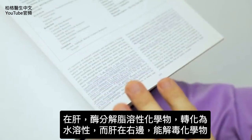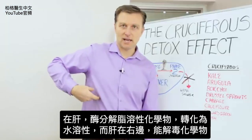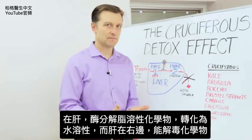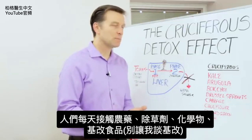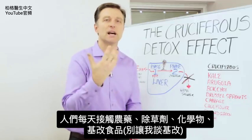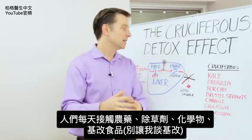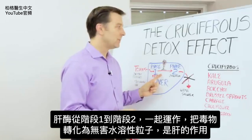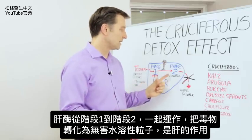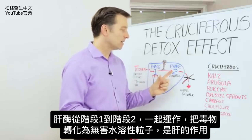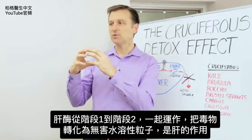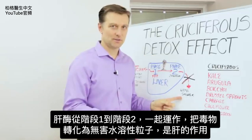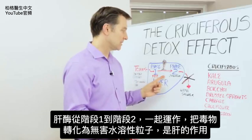So our body basically has enzymes to break down fat-soluble chemicals into water-soluble chemicals, and this happens in the liver. You've got a liver — it's on the right side. The liver has the ability to detoxify chemicals. Every day we're exposed to pesticides, herbicides, chemicals, and GMO foods. The enzymes in the liver go from phase one to phase two, and they work together to take these really dangerous poisons and turn them into harmless, water-soluble particles. That's what your liver does.